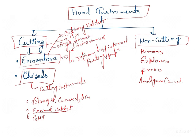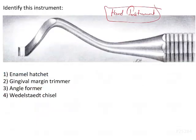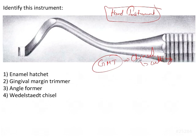The Gingival Marginal Trimmer (GMT) is a kind of chisel whose primary function is cutting. It is designed to produce a proper bevel on gingival enamel margins in proximal-occlusal preparations. So in Class 2 cavity preparations, where there is a proximal-occlusal line angle, the GMT is used for beveling. The GMT is essentially a fusion of the enamel hatchet.